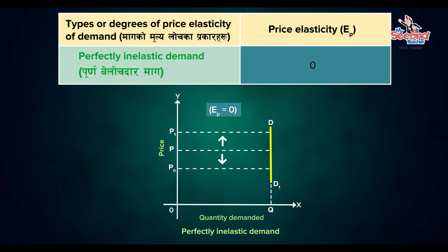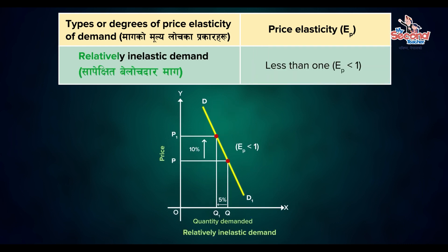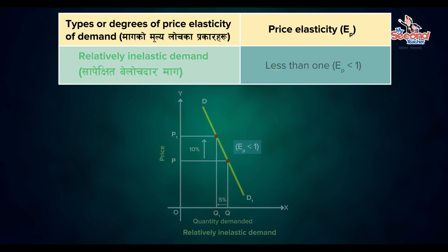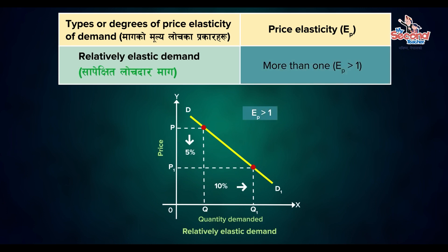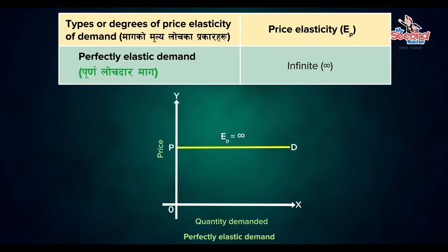The first type is perfectly inelastic demand, with an elasticity value of 0. Relatively inelastic demand has an elasticity value less than 1. When the elasticity value equals 1, it is unitary elastic demand. If the value is more than 1, it is relatively elastic demand. If the elasticity value is infinite, it is perfectly elastic demand.